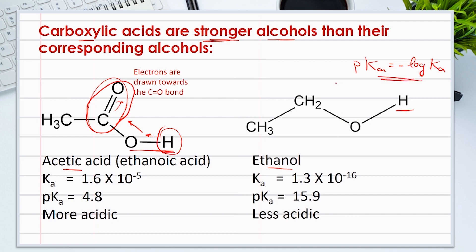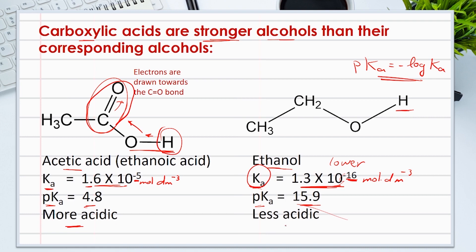Ka for acetic acid is equal to 1.6 × 10⁻⁵ mol/dm³ and the pKa is equal to 4.8. Ka for ethanol is equal to 1.3 × 10⁻¹⁶ mol/dm³ and the pKa is equal to 15.9. The lower the Ka value, the weaker the acid. Ethanol has a lower Ka value compared to acetic acid, which makes it a weaker acid. Notice that electrons are drawn away from the O–H bond towards the carbonyl C=O, which weakens the O–H bond and makes it easier to lose a proton.